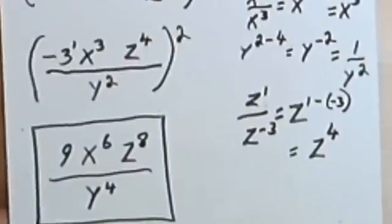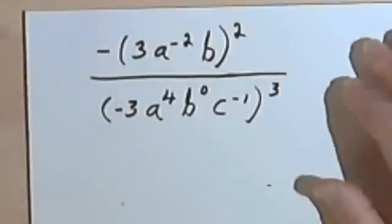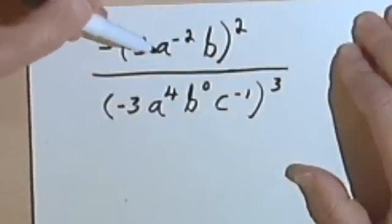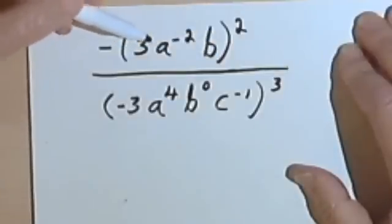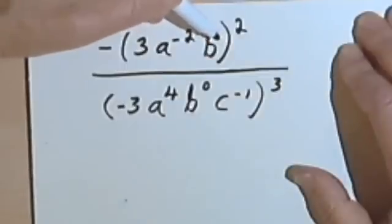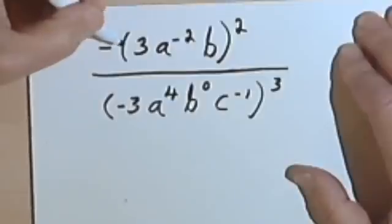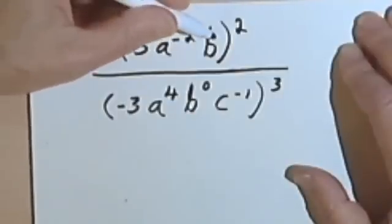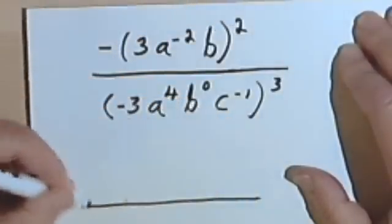Let's do one more. I've got a fraction made up of two separate expressions, each one with parentheses. I can't simplify this fraction until I take care of the parentheses. In the numerator, I've got a negative outside the parentheses, and then 3a to the negative 2b, and that whole thing is squared.